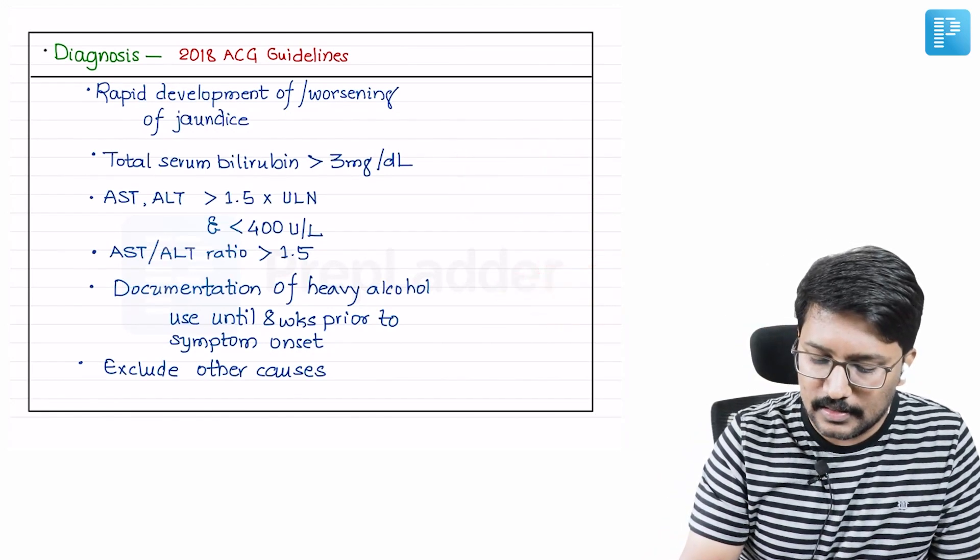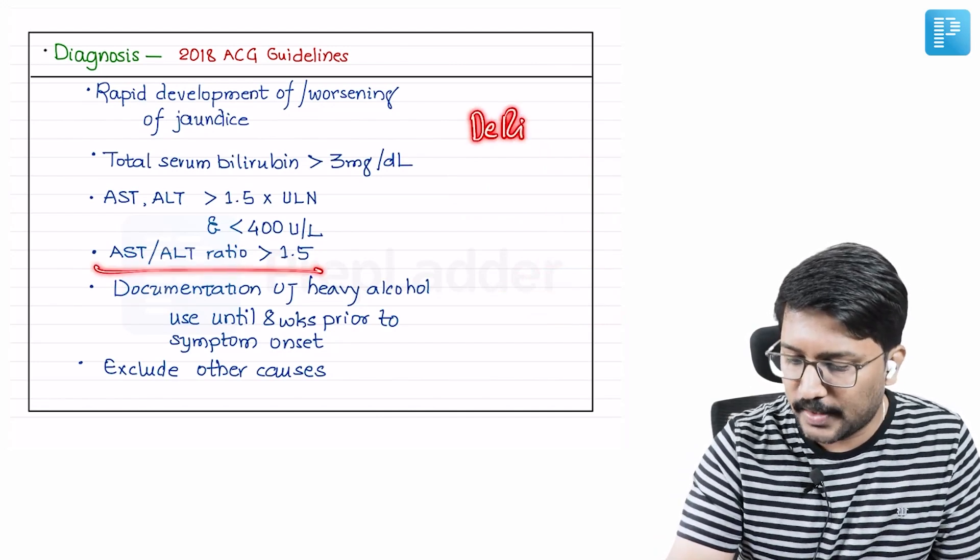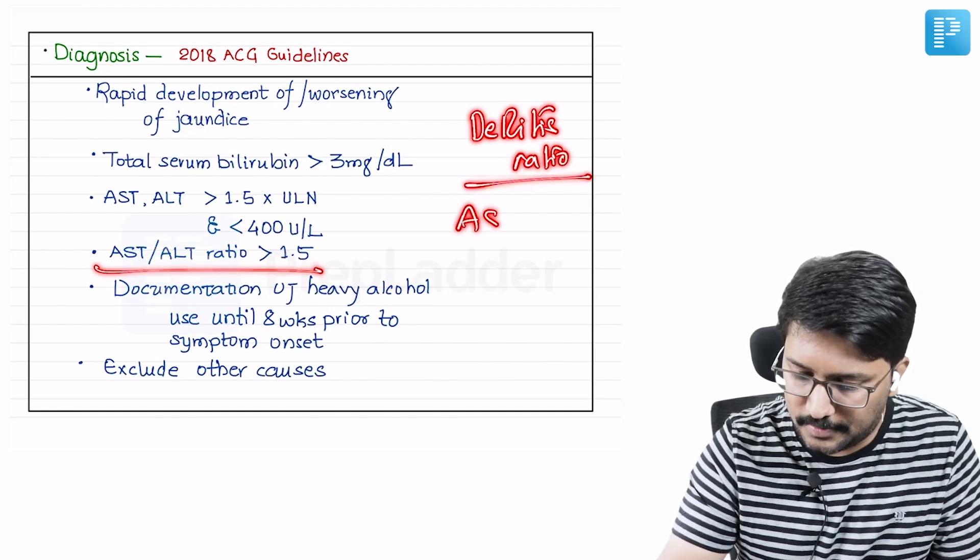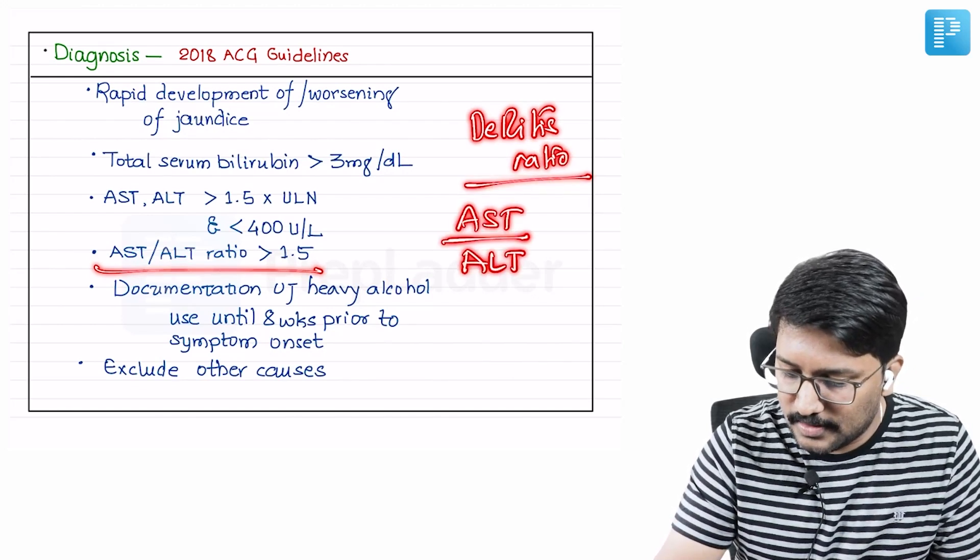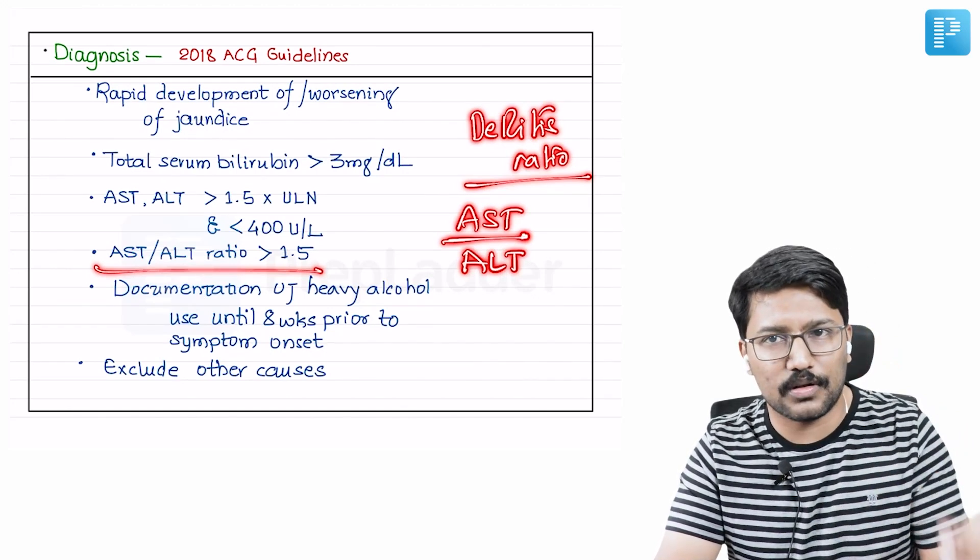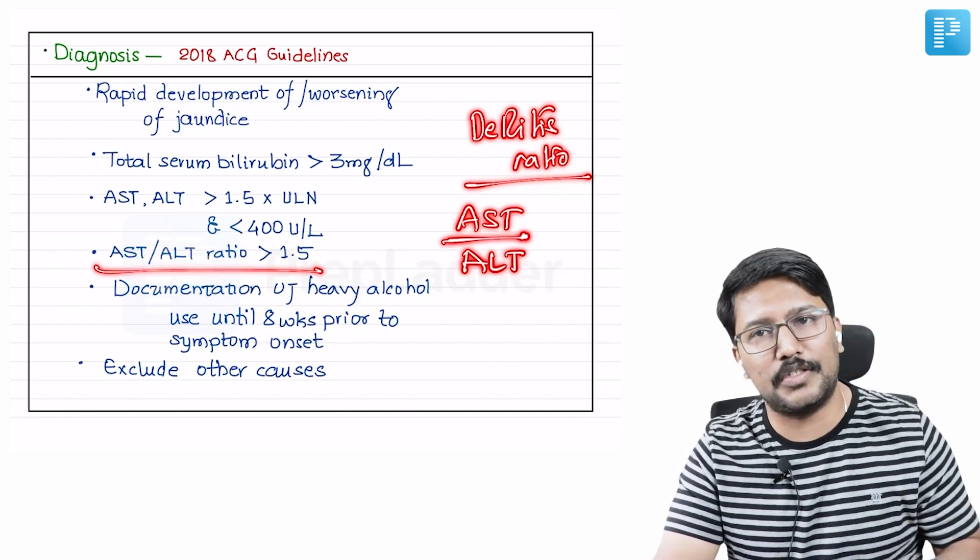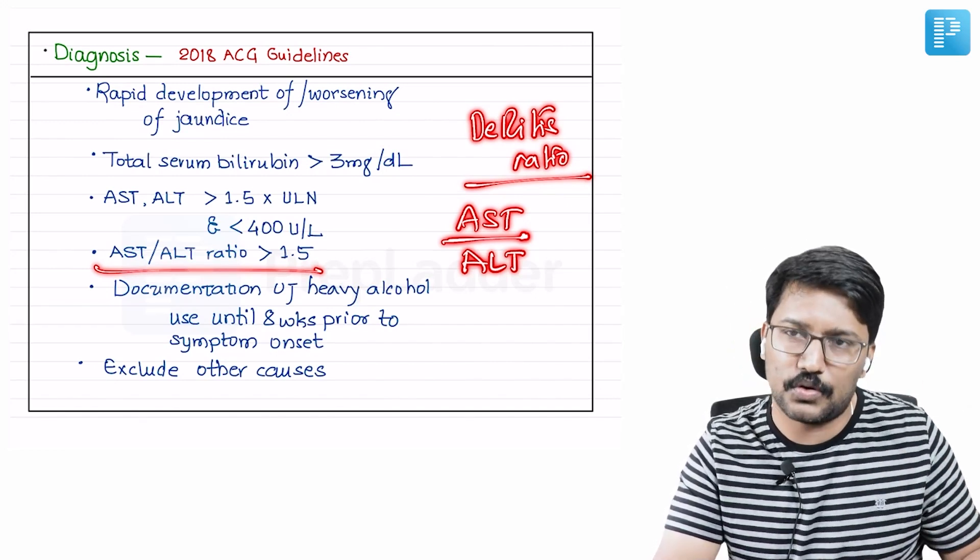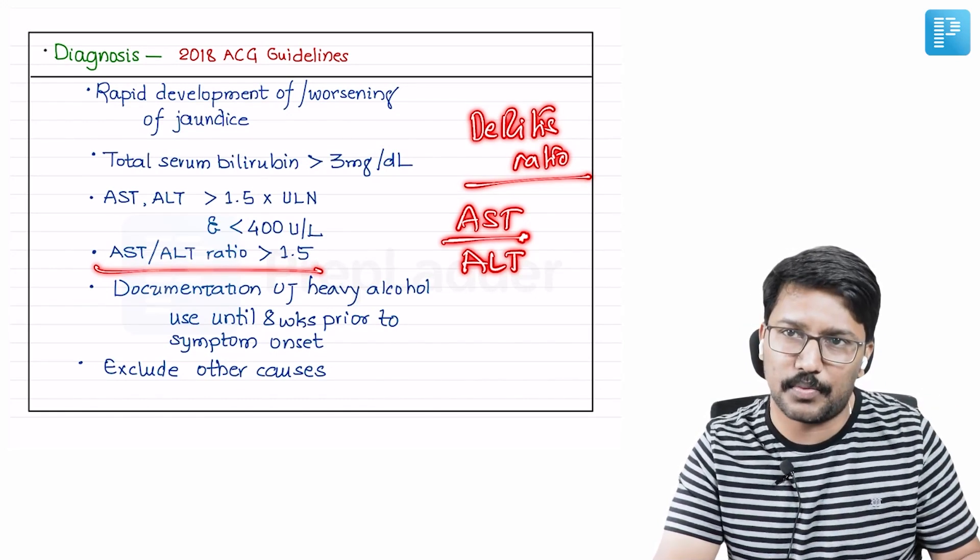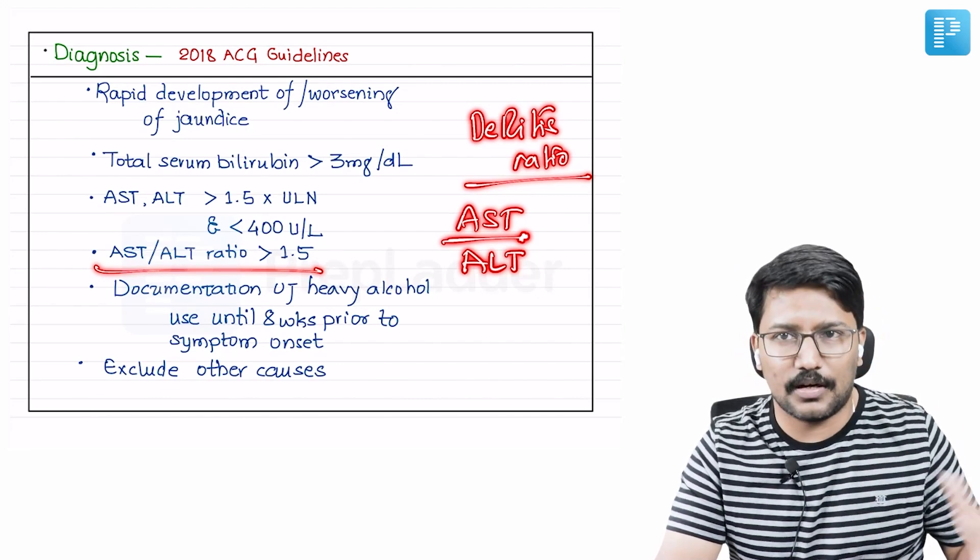Both AST and ALT should be less than 400. If they are more than 400, then it starts falling in the territory of viral hepatitis or ischemic hepatitis, and that becomes a confounding factor rather than a supportive feature. The second thing is to look at the AST by ALT ratio, what we call the De Ritis ratio. One important point to note here is in patients with alcoholic hepatitis, usually the AST by ALT ratio is more than 1.5. In fact, when you see patients, mostly it will be 3 plus. The majority of cases it is 3 plus. In fact, they have asked MCQs also: in which of the following conditions is AST by ALT ratio usually more than 3 plus? That is alcoholic hepatitis.